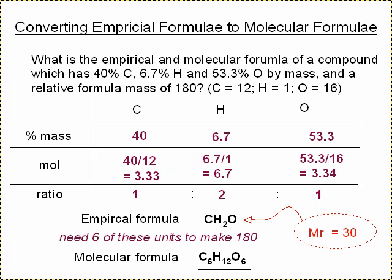And here's a final example. Converting empirical formula to molecular formula. What is the empirical and molecular formula of a compound which has 40% carbon, 6.7% hydrogen, 53.3% oxygen by mass, and a relative formula mass of 180? So there are the amounts by mass. Convert them into mole by dividing by the relative masses of carbon, hydrogen, and oxygen. And we end up with a ratio of 1 to 2 to 1. So empirical formula is CH2O.